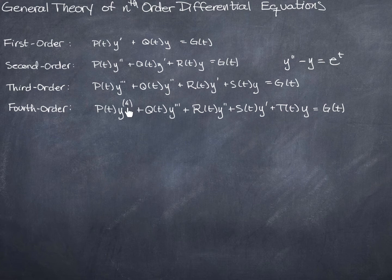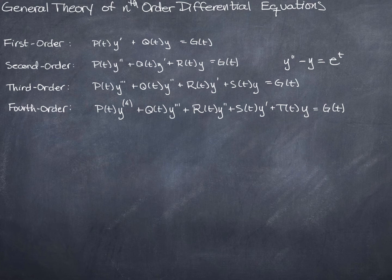Notice the slight difference in notation here. This notation means raise y to the fourth power. To distinguish it from that, we use a different notation for the fourth and higher derivatives of a function. So y to the 17th power would look one way, but the 17th derivative of y looks different. It's a very subtle difference, but it's a very important one.